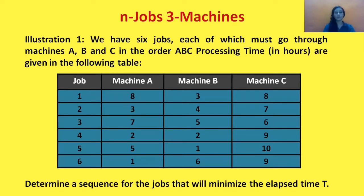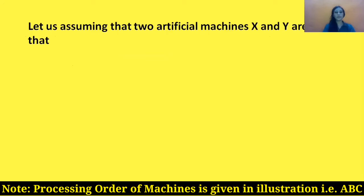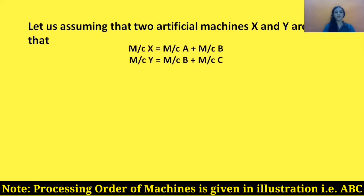To solve the problem of n jobs three machines, firstly we need to convert these three machines into two machines. So let's assume that we are creating two artificial machines, X and Y. To find the processing time of these two artificial machines, we need to add the processing time of machine A and machine B to get the processing time of the first artificial machine X. Then to get the second artificial machine Y's processing time, we need to add the last two machines' processing time.